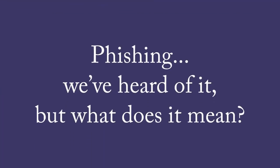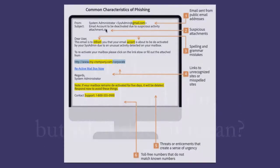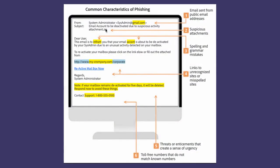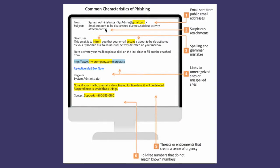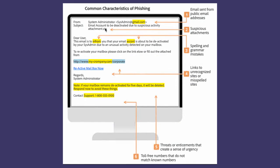Phishing is a form of social engineering where an attacker uses human interaction to obtain or compromise information about an organization or its computer systems. Phishing attacks use email or malicious websites to solicit personal information by posing as a trustworthy organization.